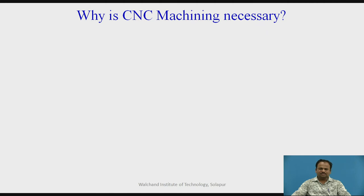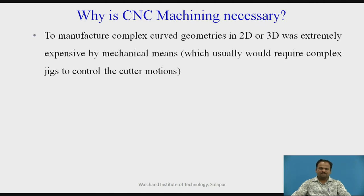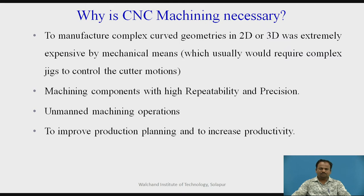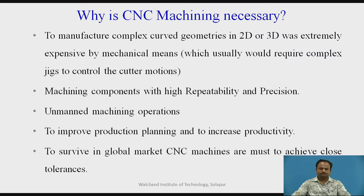Why is CNC machining necessary? To manufacture complex curved geometries in 2D or 3D was extremely expensive by mechanical means, which usually would require complex jigs to control the cutter motions. Machining components with high repeatability and precision, unmanned machining operations, to improve production planning and increase productivity. To survive in the global market, CNC machines are a must to achieve close tolerances.